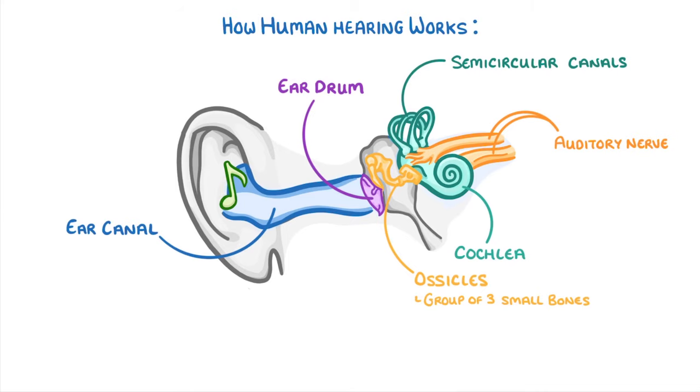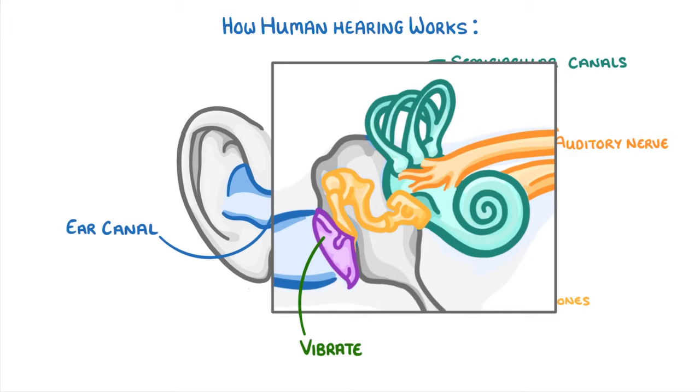Whenever sound waves reach our ear, they travel along the ear canal and hit our eardrum, which causes it to vibrate. If we zoom in, we can see that these vibrations will be transmitted along the tiny bones, called ossicles, through the semicircular canals, and into the cochlea.